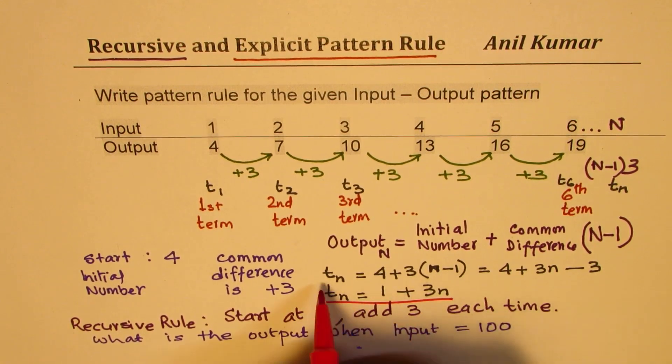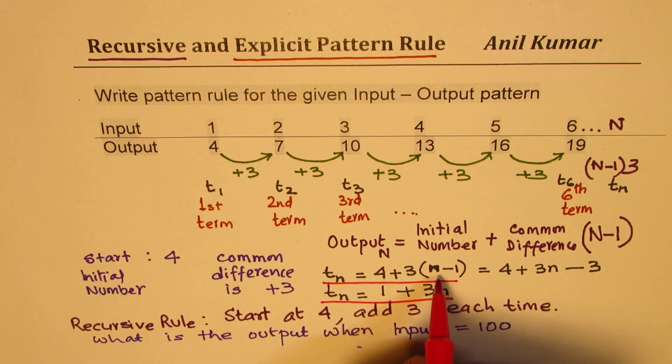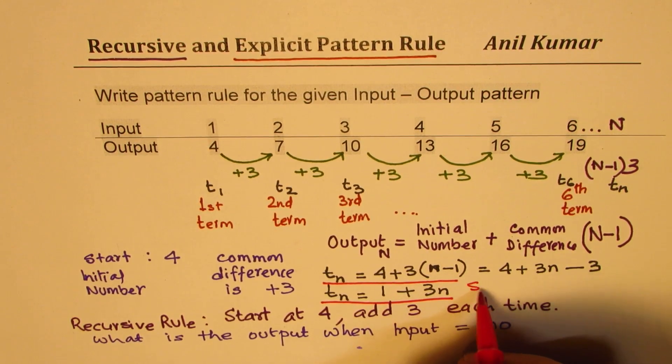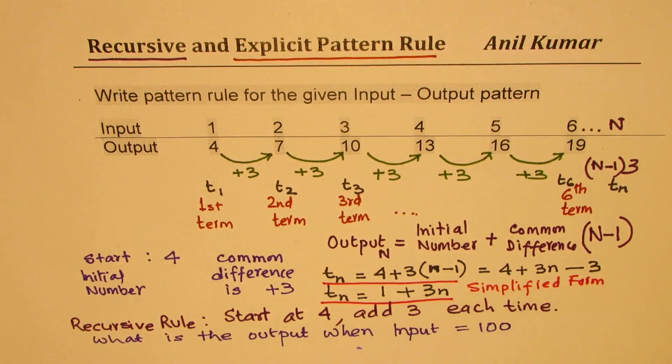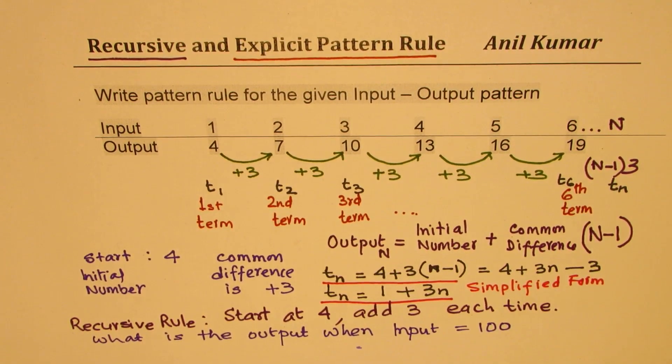So if I write in this form, it is using common difference. And this is simplified form. At times, it may become difficult to write in simplified form. So I'll give you a trick to get to this result.